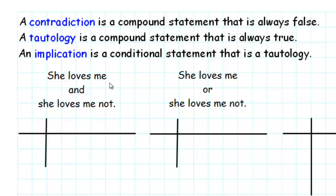The first statement is: 'she loves me, and she loves me not.' Let's represent the simple statement 'she loves me' with the letter P. Then 'she loves me not' is just not P, so altogether we have P and not P.